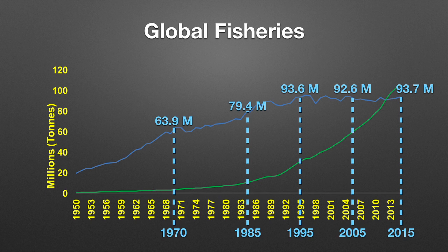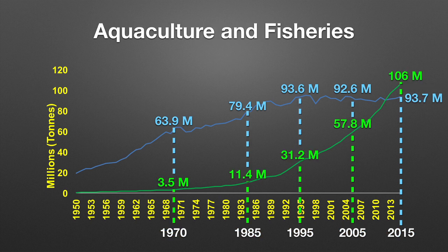Looking at capture fisheries: in the 1950s there were about 20 million tons being produced. This continued to grow through 1970 and 1985 to about 80 million tons. From 1995 to more recently in 2013–2015 it remained stable, fluctuating but staying around 90 million tons in total production.